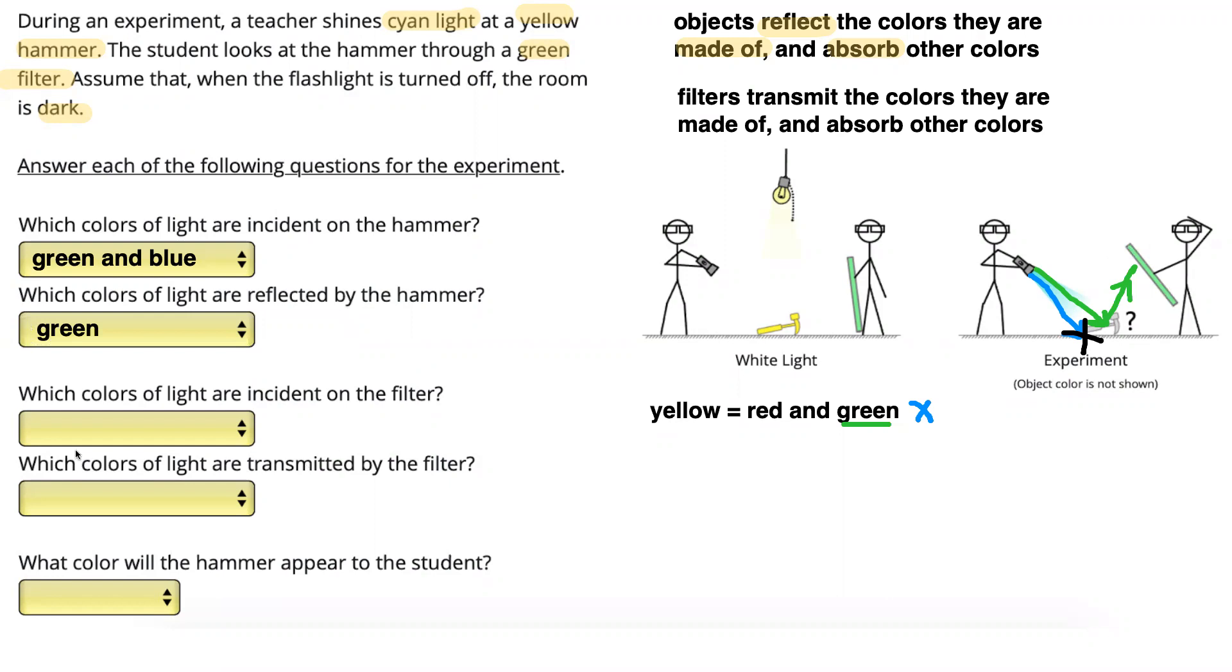Now we need to think about what's happening at the filter. The green light that was reflected off the hammer is going to shine through the filter. So green light is incident on the filter. Now we have a green filter that the green light is shining on. And we have this rule up here, which is that filters transmit the colors they are made of and absorb other colors.